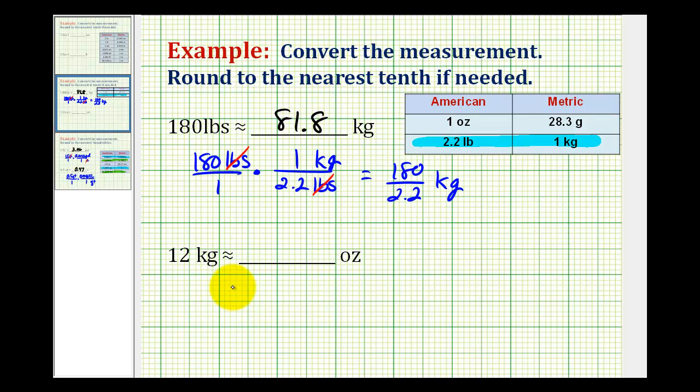Now let's take a look at a second example. Here we want to convert 12 kilograms to ounces. So we'll write 12 kilograms as a fraction, and now let's go and take a look at our conversion table. This one's a little bit more challenging, because the only conversion that we're given is from ounces to grams, and we have kilograms.